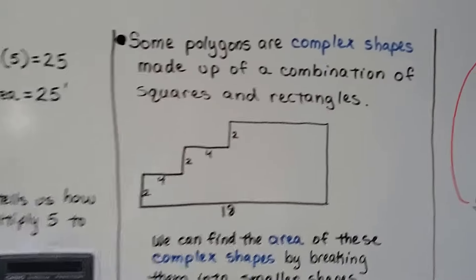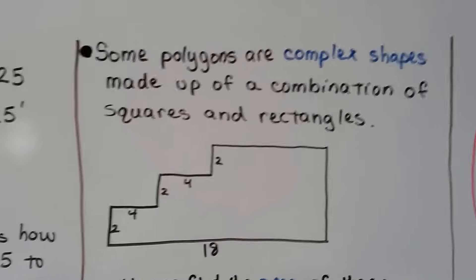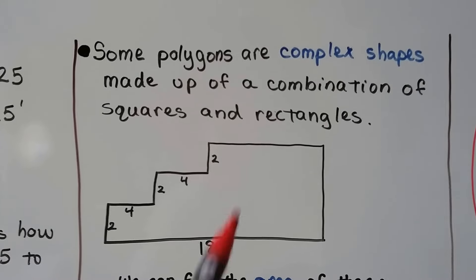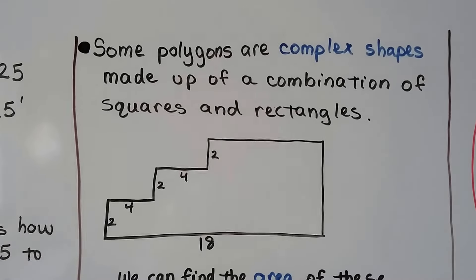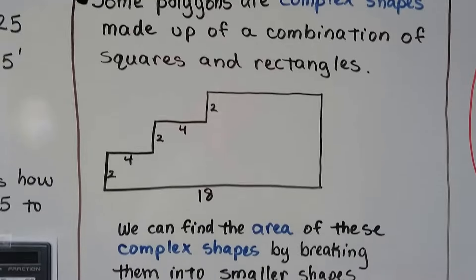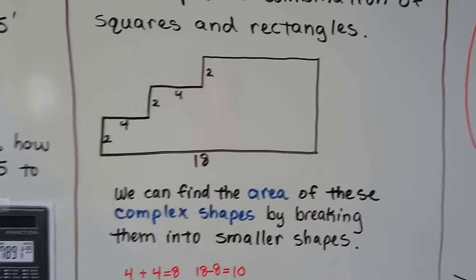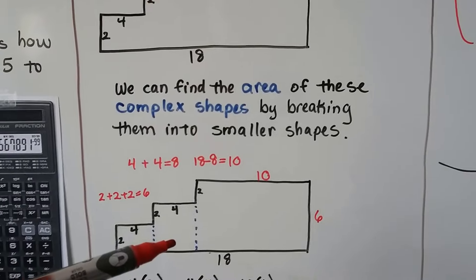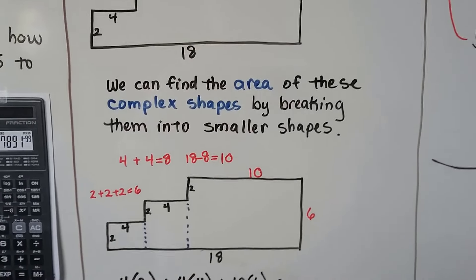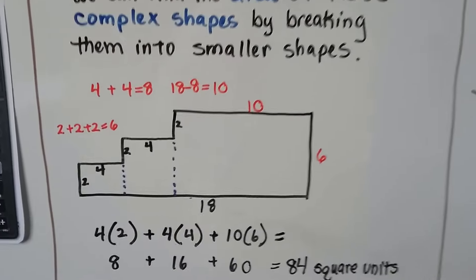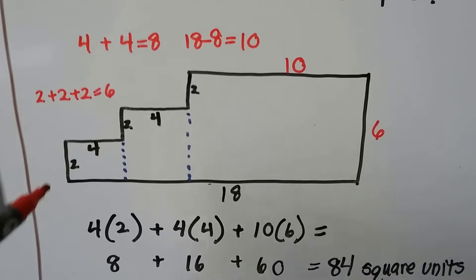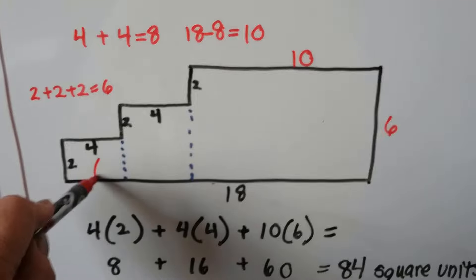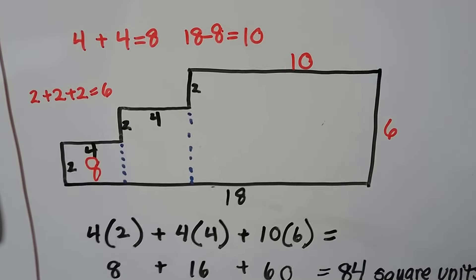Some polygons are complex shapes made up of a combination of squares and rectangles. So we don't have a measure for the top or the side, but we could figure it out. We can find the area of these complex shapes by breaking them into smaller shapes — just draw some lines down. We know that this is a 4 and that's a 2, so we know inside of here is an 8 — it's 4 times 2.